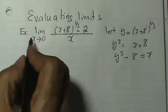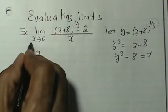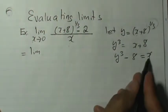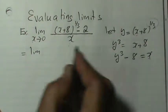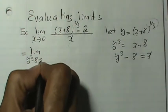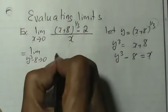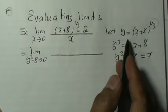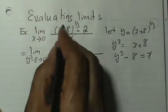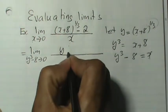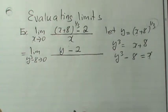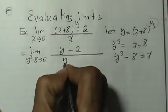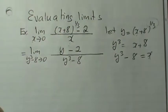To do that, we write the limit — instead of x approaching zero, since x equals y cubed minus 8, we say y cubed minus 8 approaches zero. In the numerator, instead of x plus 8 to the power of one-third, we substitute y. So the expression becomes y minus 2 all over x, and we said x is y cubed minus 8. This is how we change completely the variables — everything in terms of y.